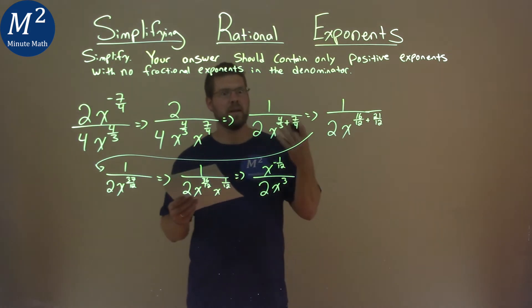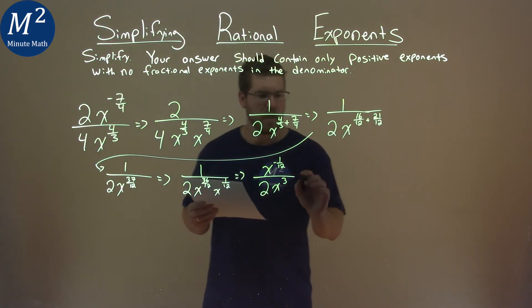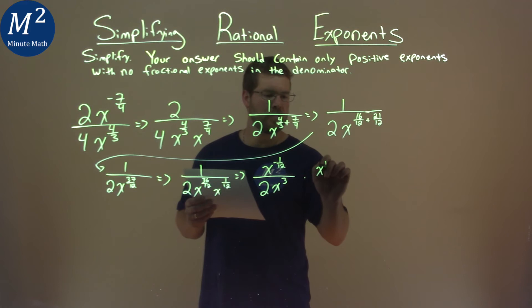But now I have an issue. I don't want a negative exponent. So I'm going to multiply this whole thing by x to the first over x to the first power.